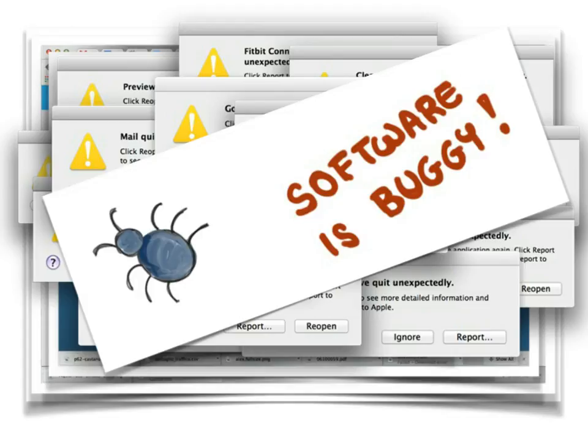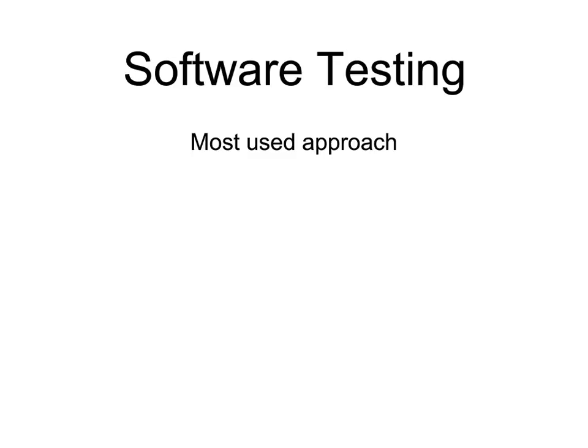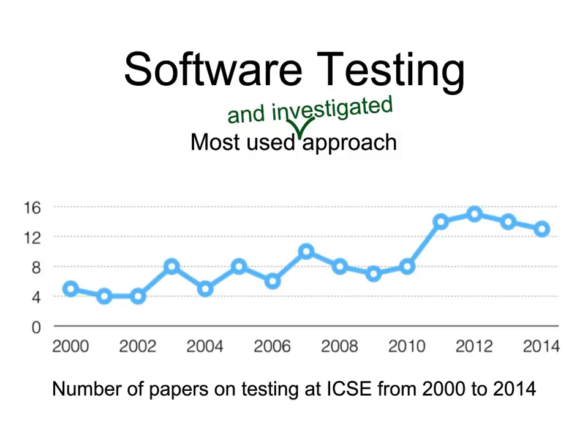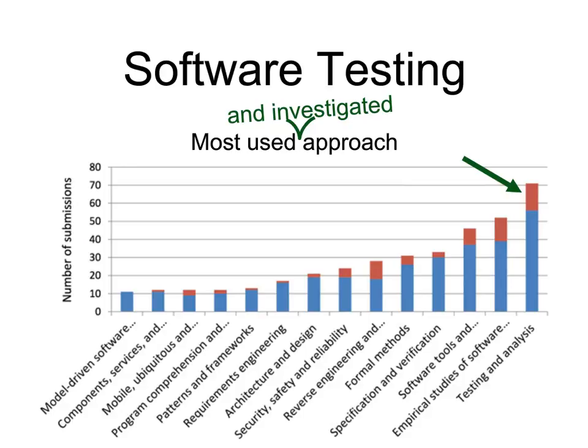The main technique used in software verification is definitely software testing — it's the most used approach for verification nowadays, and also the most investigated by researchers. When we looked at the proceedings of ICSE from 2000 to 2014, the number of papers on testing has been growing, and testing papers take up roughly 15–20% of the overall program — about one paper in five. Submission data from FSE 2012 also confirms that testing and analysis dominates the number of submissions.